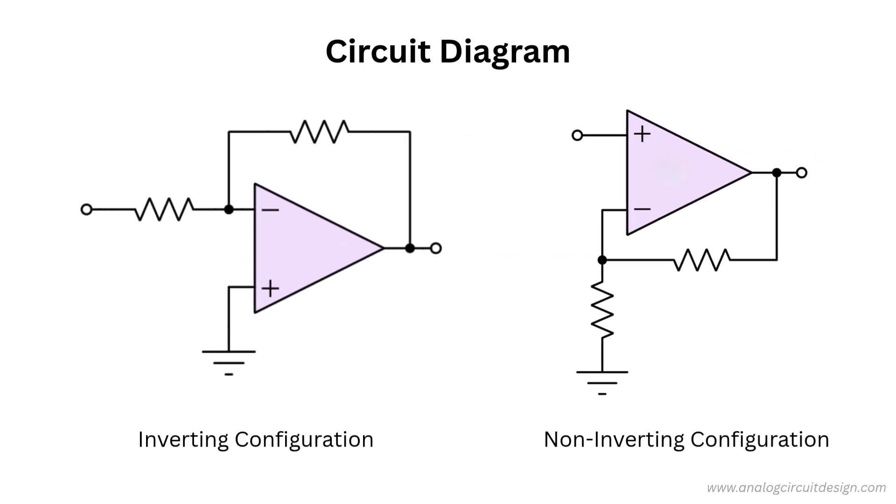Let's start with the inverting configuration. In this configuration, the input signal is connected through a resistor RI to the inverting input of the op-amp, while the non-inverting input of the op-amp is grounded. A feedback resistor RF connects the output back to the inverting input, ensuring negative feedback. The key result? The output is inverted. It's 180 degrees out of phase with the input.